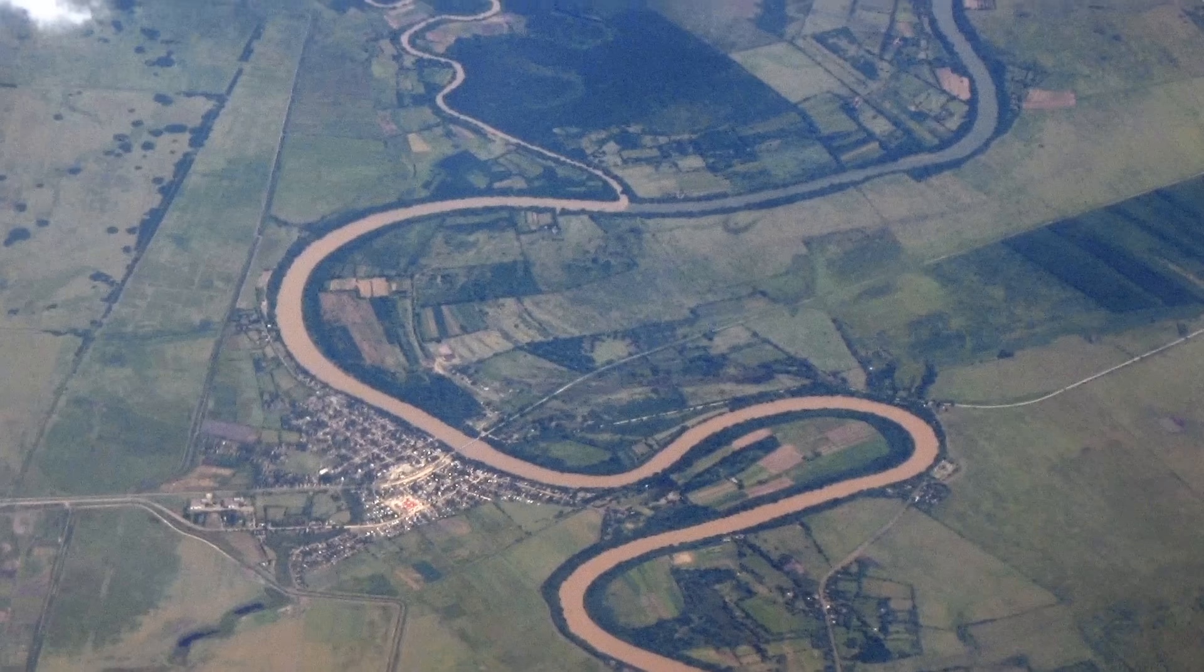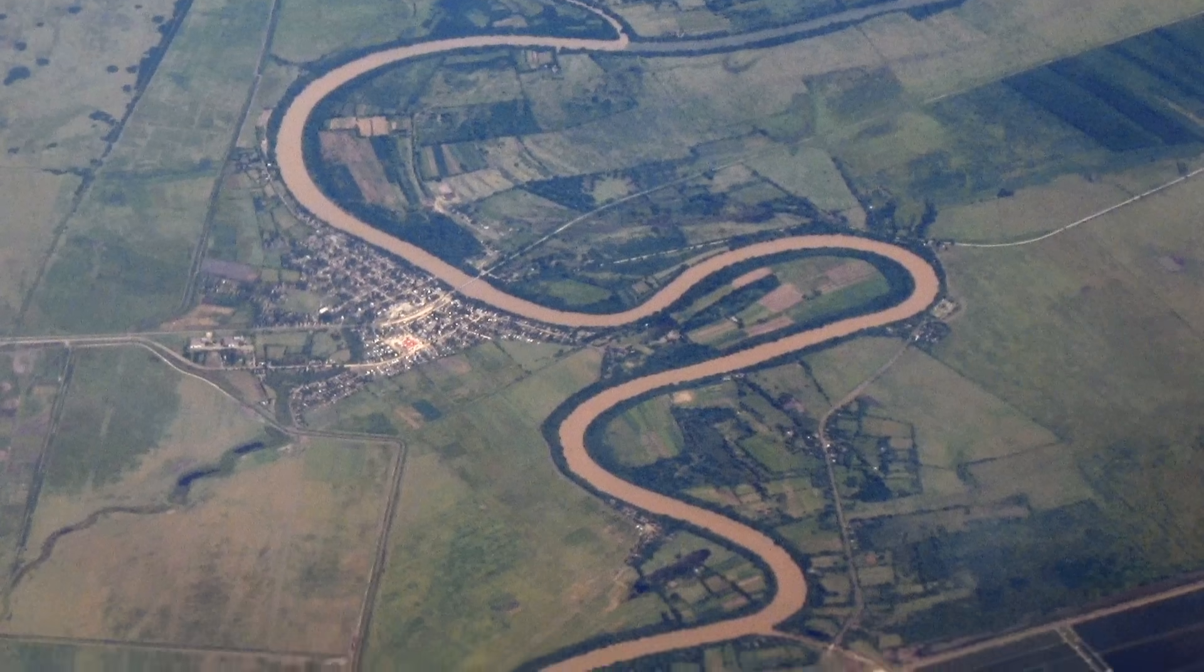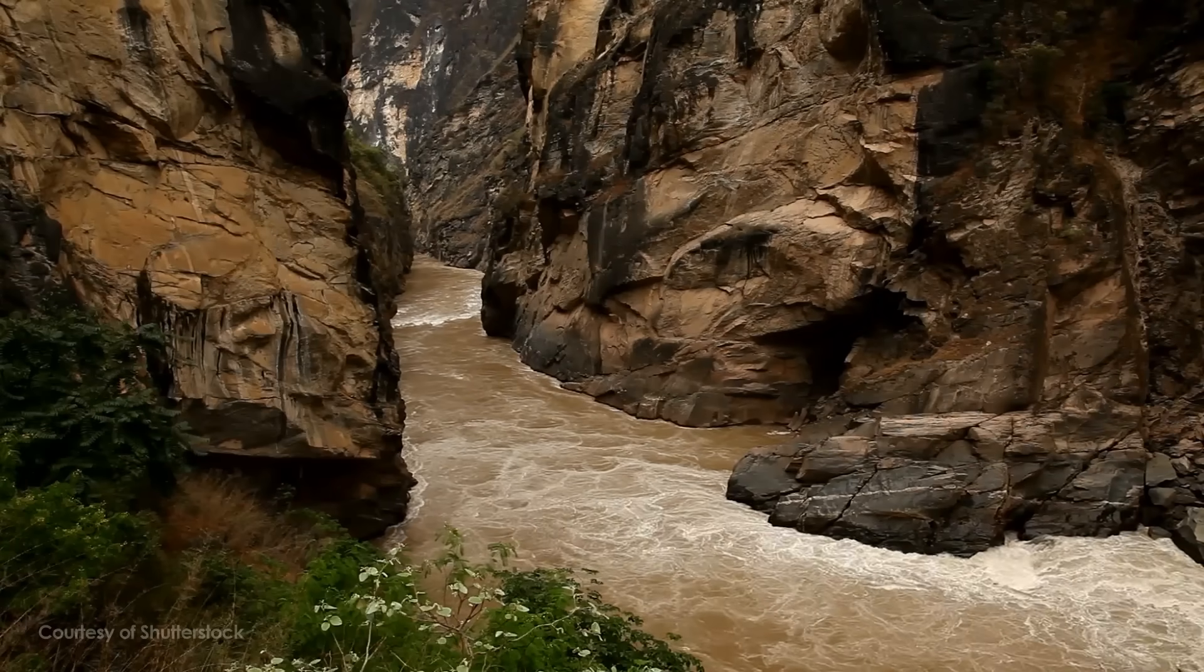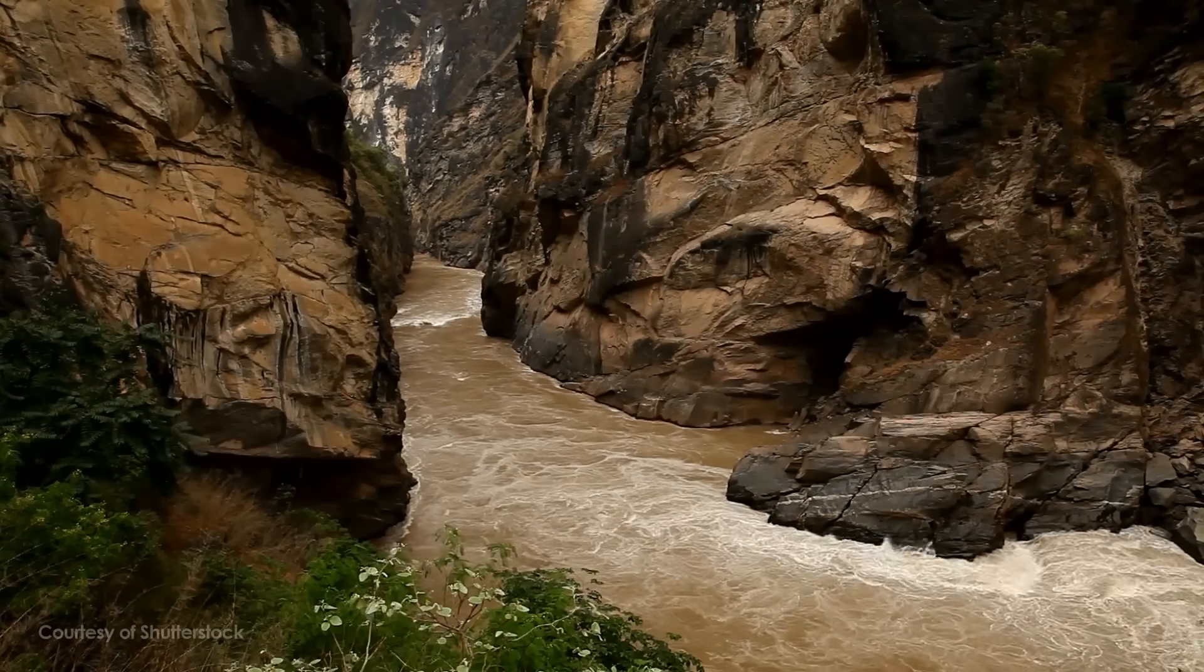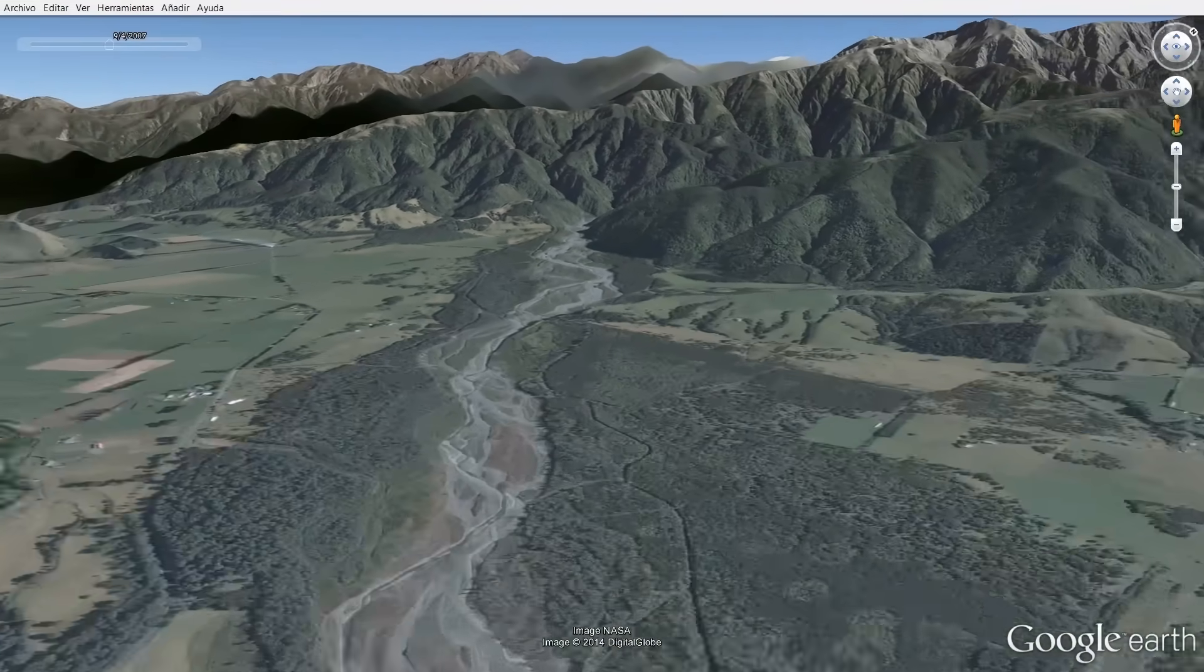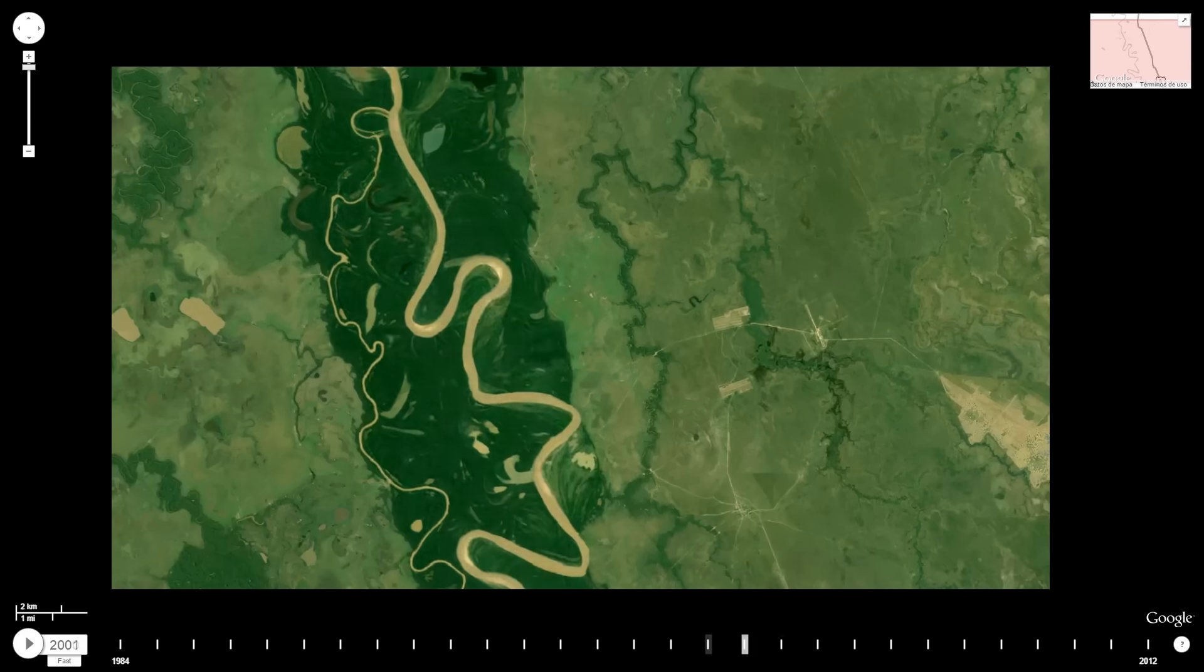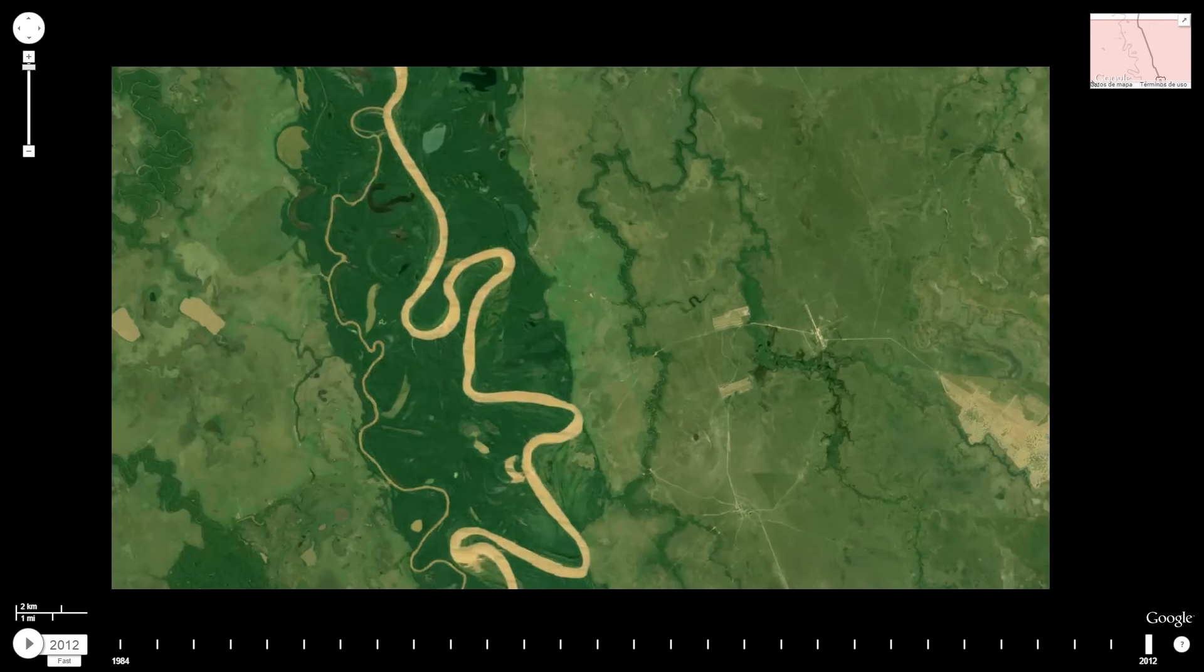Compared to the whitewater streams that tumble down mountainsides, the meandering rivers of the plains may seem tame and lazy. But mountain streams are corralled by the steep-walled valleys they carve. Their courses are literally set in stone. Out on the open plains, those stony walls give way to soft soil, allowing rivers to shift their banks and set their own ever-changing courses to the sea.